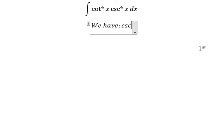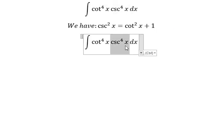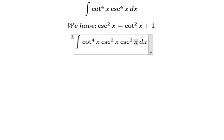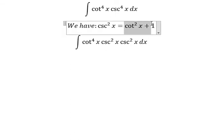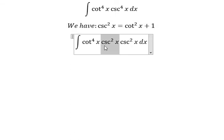We have csc²(x) = cot²(x) + 1. So in this cot⁴(x) csc⁴(x), we can separate them into cot⁴(x) times csc²(x) times csc²(x). And now we replace csc²(x) with cot²(x) + 1.